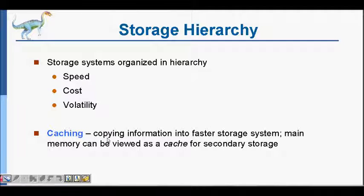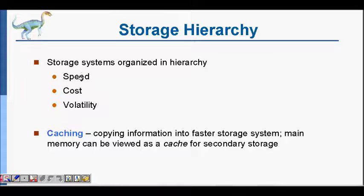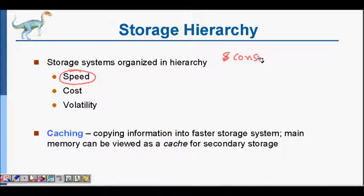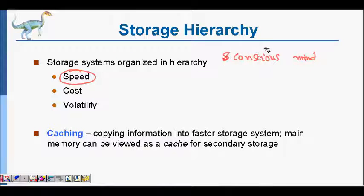We will learn about storage hierarchy. We have RAM, which is smaller, and a hard disk, which is larger. An important thing is how fast you can access memory. Here's a human analogy: your conscious mind — whatever you remember right now, for example what you've studied for your OS exam — that is your RAM. Fast access, you can crack your entrance exams and interviews.